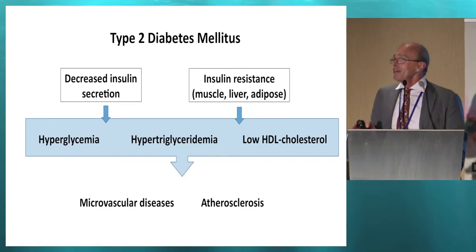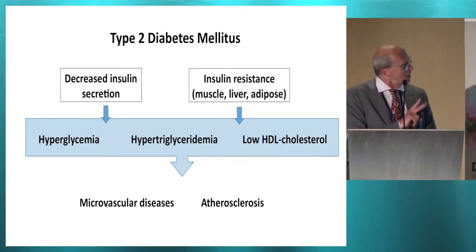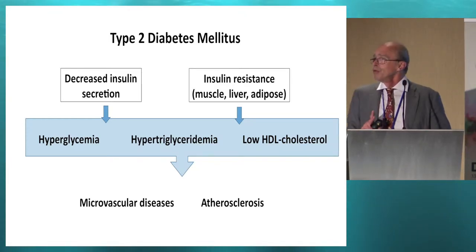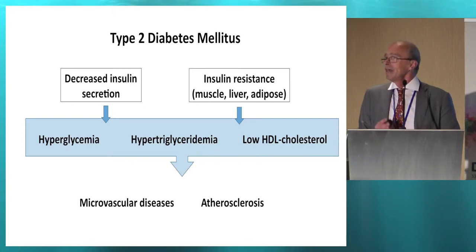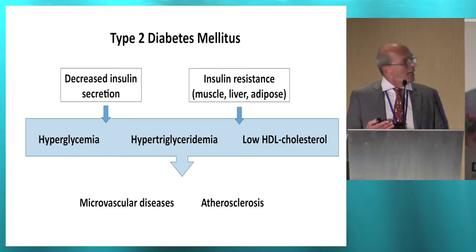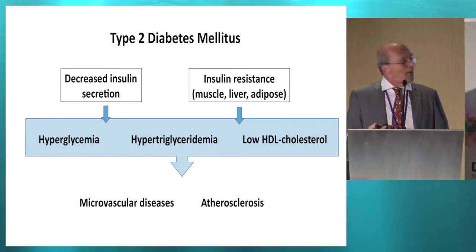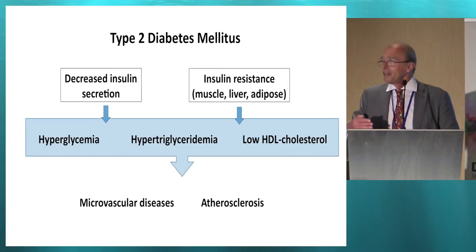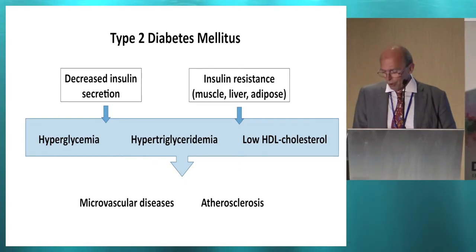If you look first at the white side, let's look at the very oversimplified view of type 2 diabetes. Type 2 diabetes comes from a mixture of decreased insulin secretion and insulin resistance. Insulin resistance can be present at the level of the muscle, liver, and adipose tissue. This mixture causes hyperglycemia, hypertriglyceridemia, and decreases HDL cholesterol, leading to long-term micro- and macrovascular complications.